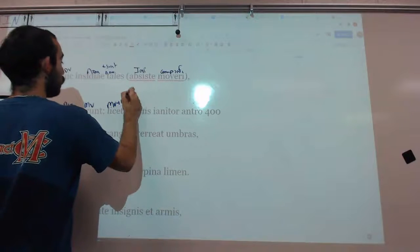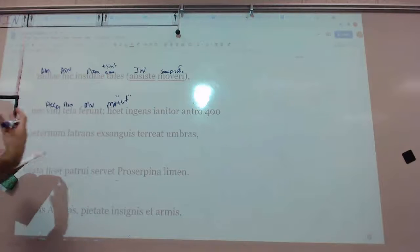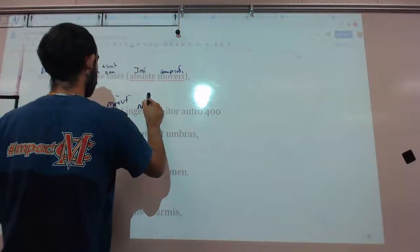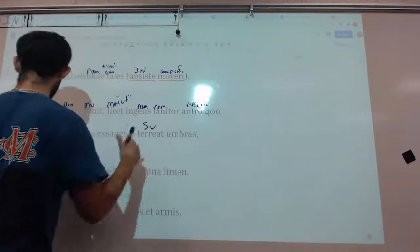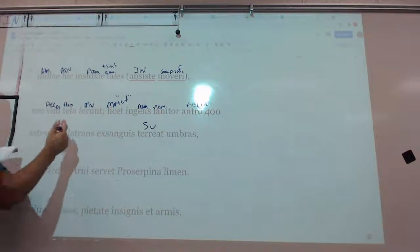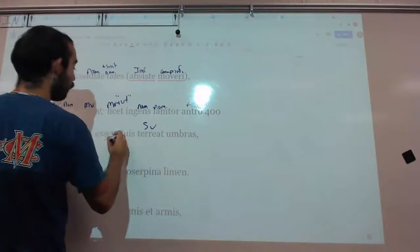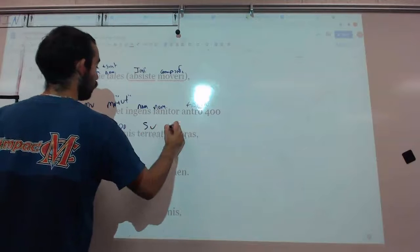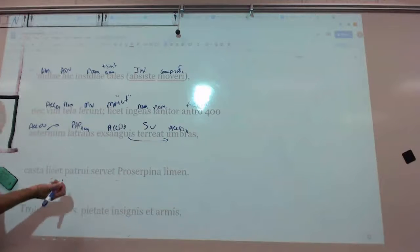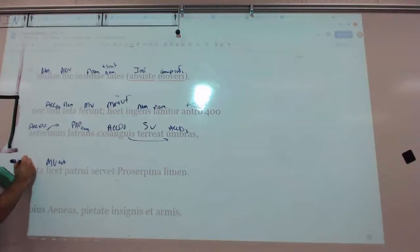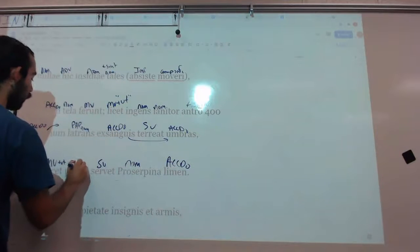Nor, weapons bring violence. It is permitted, licet ut, the book I see has a great note about this. We need to add ut, not ut, ut, with licet, to make a purpose clause. It is permitted so that the ingens janitor, in the cave, PAP nominative, barking for eternity, or barking eternally, terrifies exsangues umbras. Terrifies bloodless shades, lifeless ghosts.